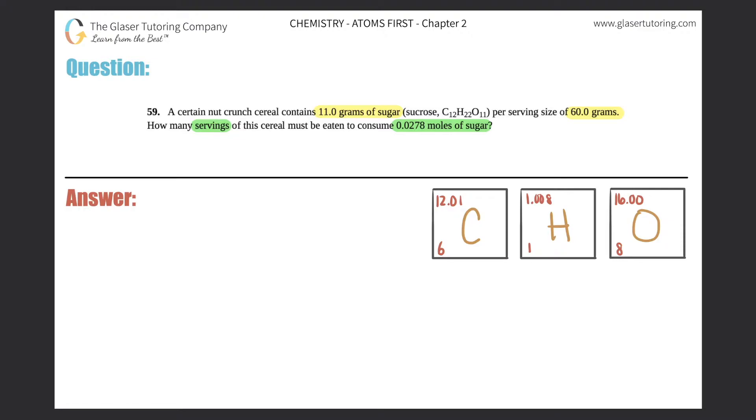Okay, so what the question is asking is they want you to go from 0.0278 moles of sugar, and they highlighted what certain sugar they want you to use - they want you to use C12H22O11, sucrose - and somehow they want you to get to servings of cereal.